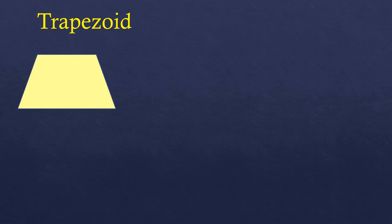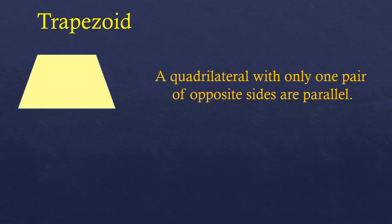Now let's talk about the trapezoid. A trapezoid is not a parallelogram — it is a quadrilateral with only one pair of opposite sides that are parallel, unlike the parallelogram which has two pairs.